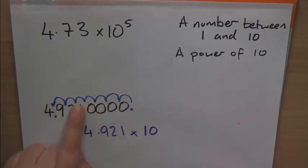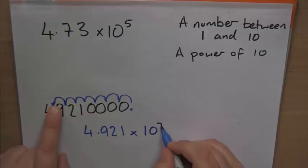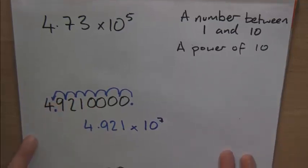1, 2, 3, 4, 6, 7. So it's 10 to the power of 7. So this number we have here, this 49,210,000, is in standard form 4.921 times 10 to the power of 7.